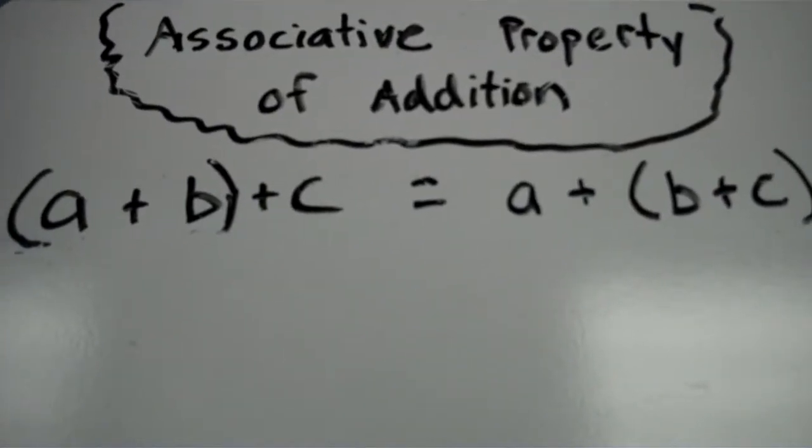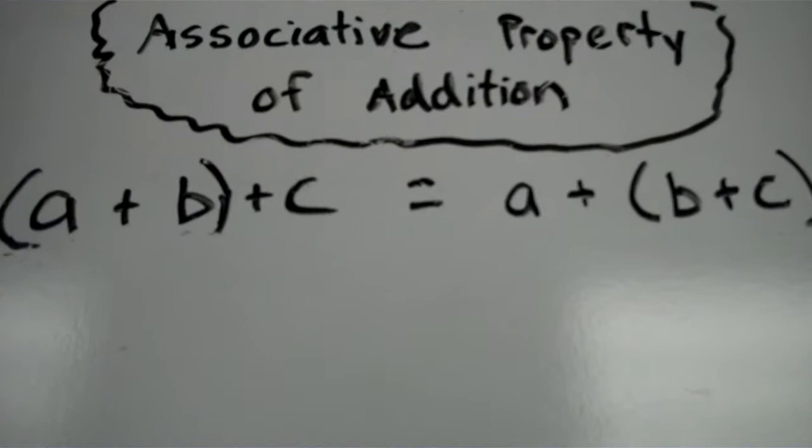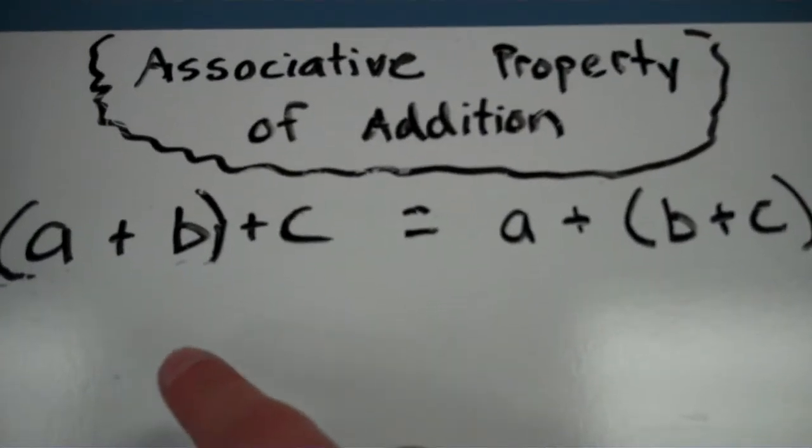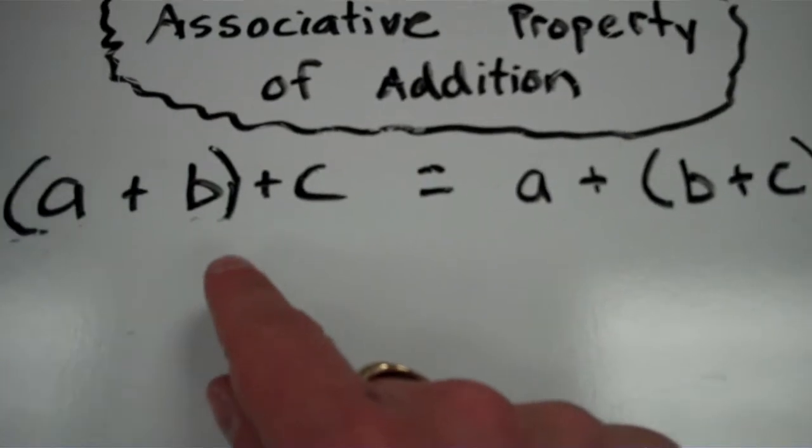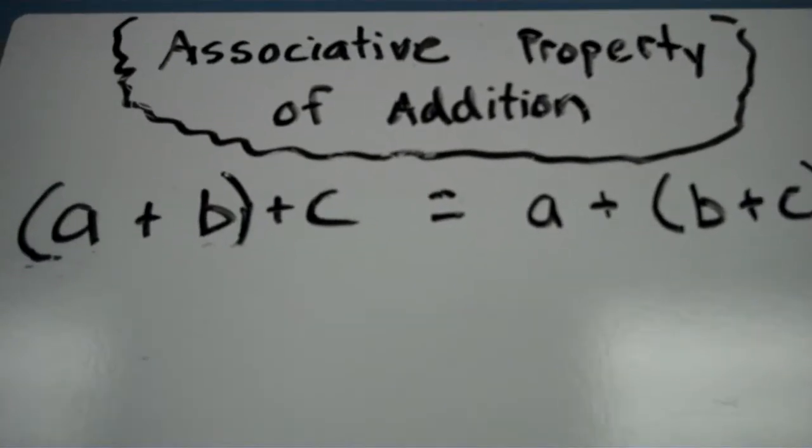So now we're learning about the associative property of addition. The associative property of addition states that when you have multiple addends that you're adding up, it doesn't matter how you group them as long as you're using addition the whole time.